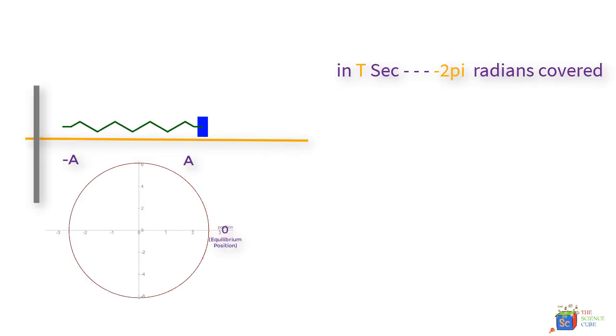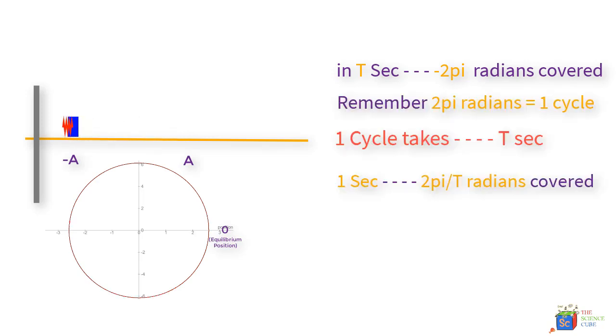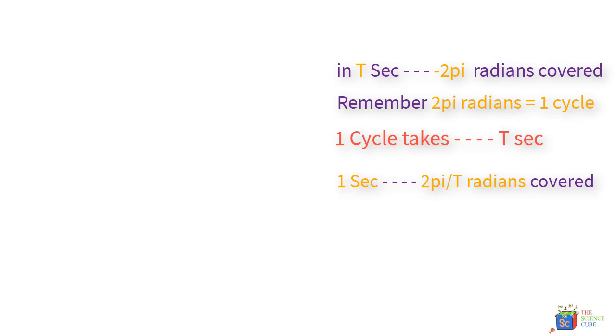We could have also arrived at this by saying that 2π radians are covered in T seconds, because 2π radians is equal to one cycle and one cycle takes T seconds. Therefore, the angular velocity omega is equal to 2π upon T, and we've learned earlier that one upon T is nothing but F, so this equals 2πF.